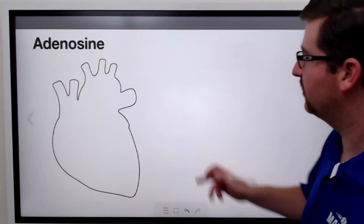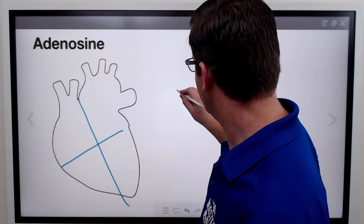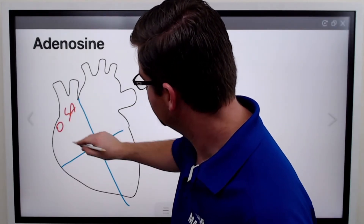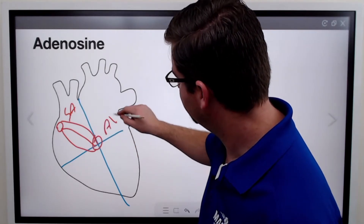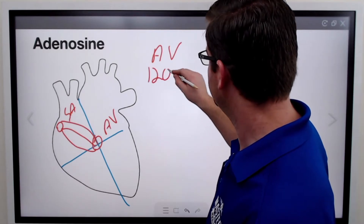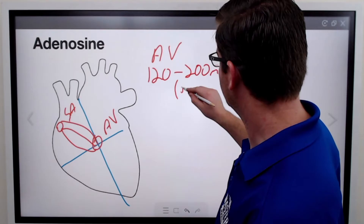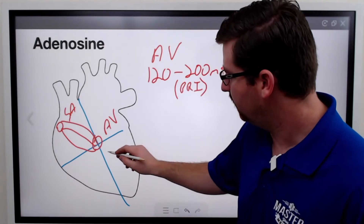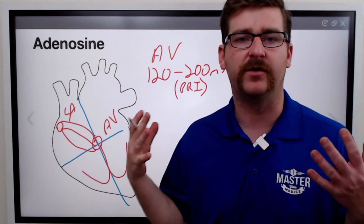First off, let's talk about what adenosine does. The SA node is where the electricity originates, passes through the atria down to the atrioventricular node. The AV node holds on for 120 to 200 milliseconds — also called your PR interval — then kicks it out through the bundle of His into the bundle branches and out to the rest of the ventricles.